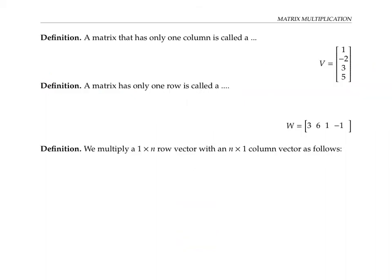Before we define multiplication for general matrices, I want to start with very special matrices called vectors. A matrix that has only one column is called a column vector. Here's an example: it has four entries all in one column, so as a matrix it's a four by one matrix. In general, a column vector is an n by one matrix.